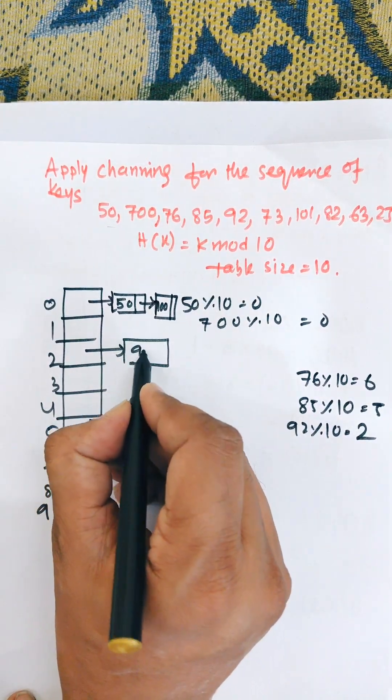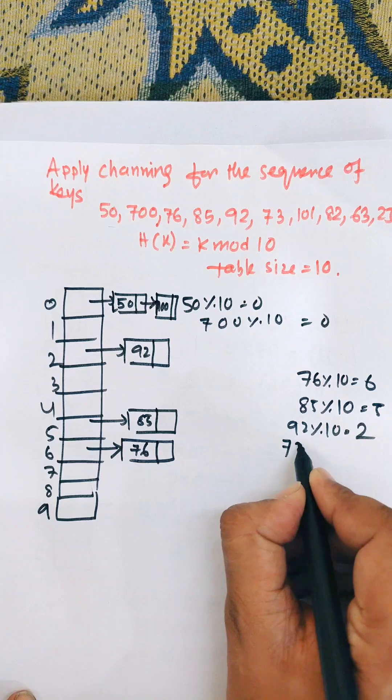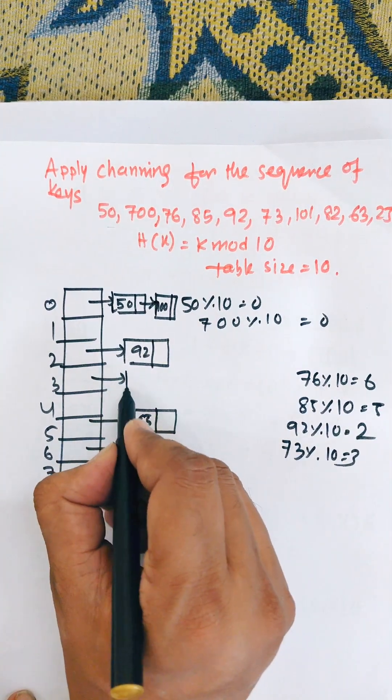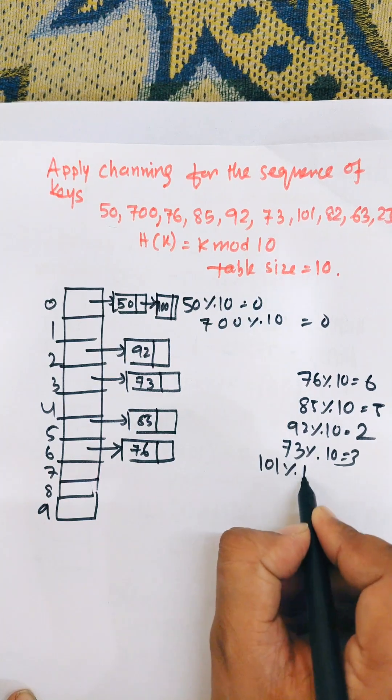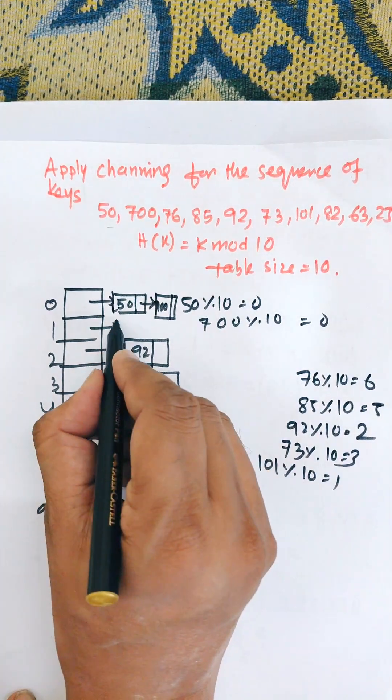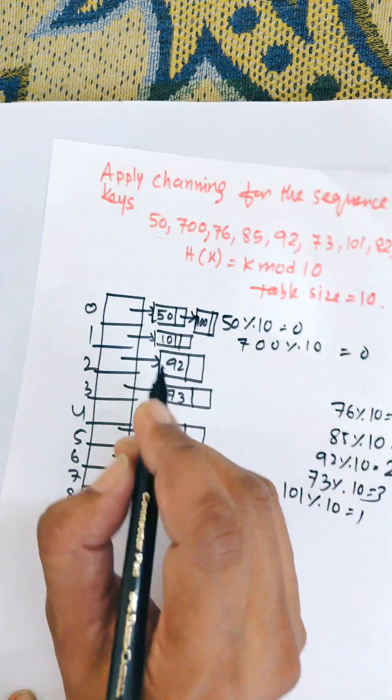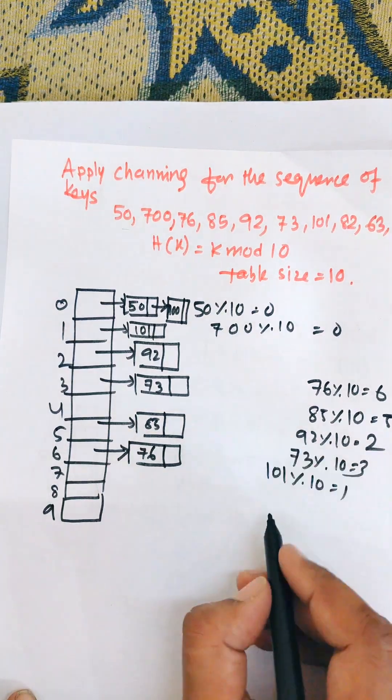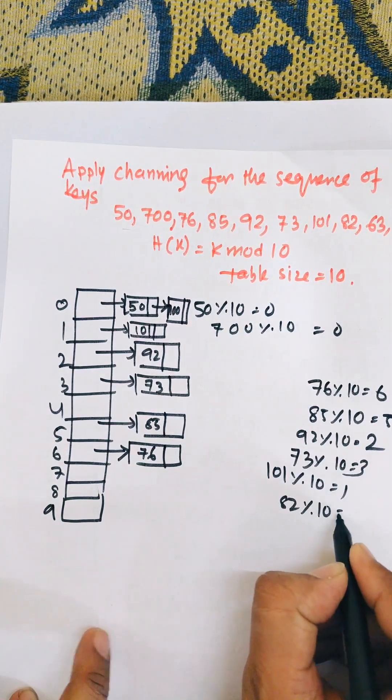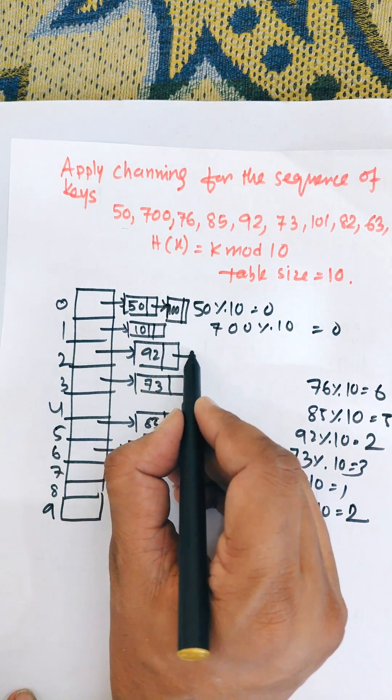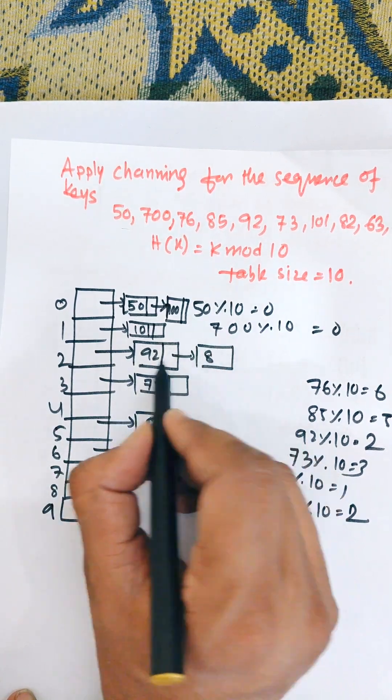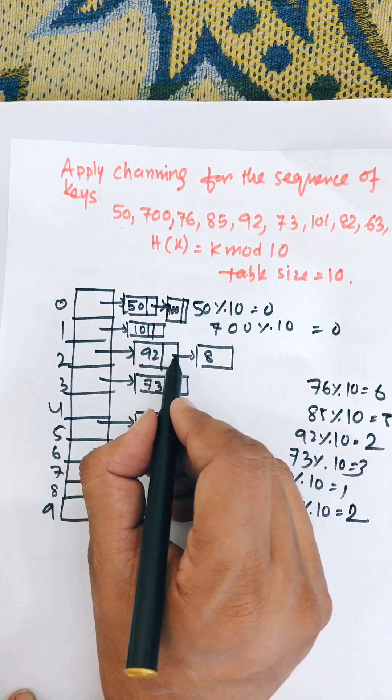Now 101 mod 10 equal to 1, that means 101 goes to location 1. Next is 82, 82 mod 10 equal to again 2. Already 92 is available, so connect 82 after 92. There is a pointer which points to 82, add 82 after 92.